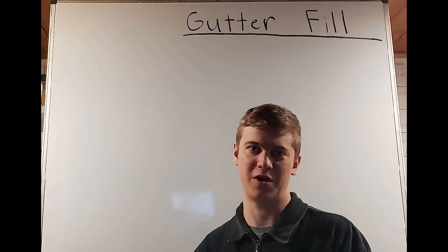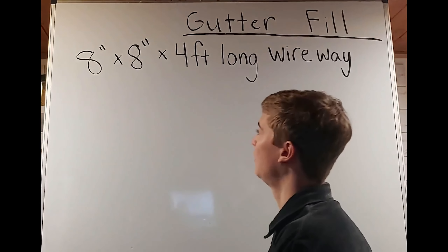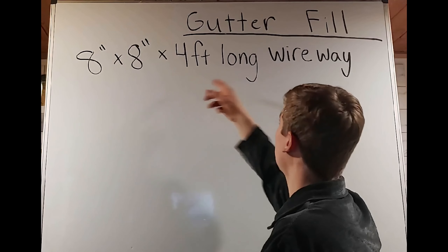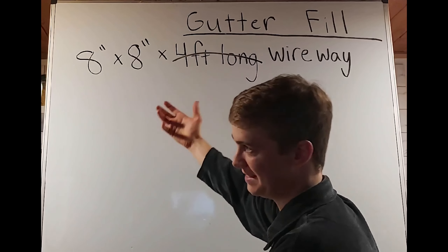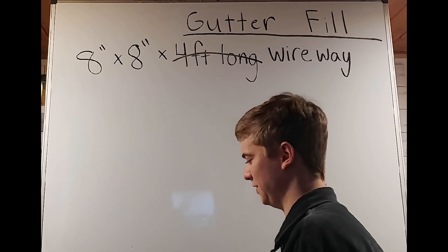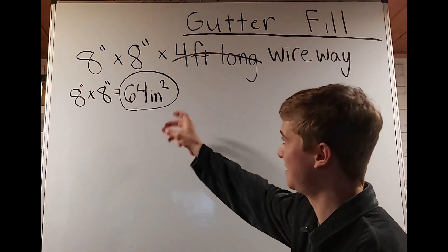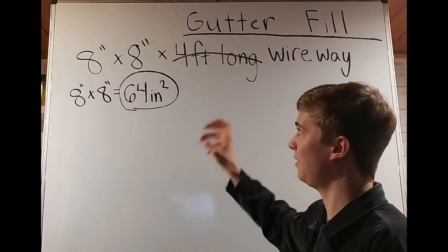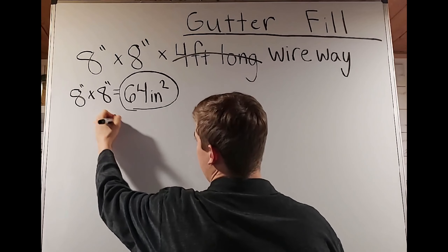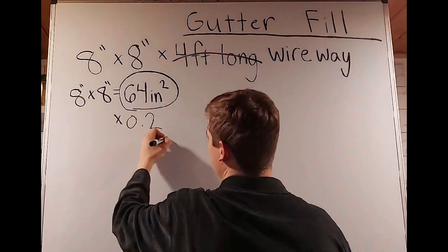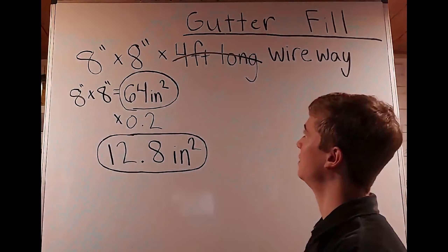For the next question, I'll break it into two parts. We have an 8-inch by 8-inch by 4-foot-long wireway. We disregard the fact that it's 4 feet long. We know it's 8 inches by 8 inches, so 8 times 8 gives us 64 square inches. We're not done — 64 square inches is the total area, but we only want 20% of the total area. So we do 64 square inches times 0.2, which gives us 12.8 square inches. That's how much we can fill this wireway.